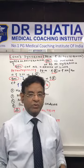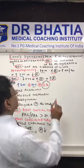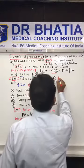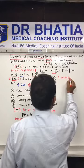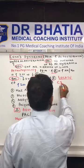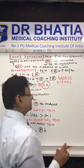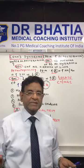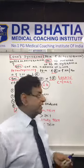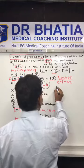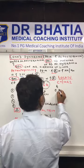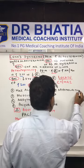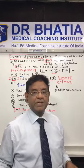Once we confirm Conn's syndrome, since it is usually a unilateral adenoma or bilateral adrenal hyperplasia, we need to locate the problem. For that, we do either a CT abdomen or MRI. This is essential because the final treatment is surgery. In the meantime, for patients presenting with hypertension, medical therapy includes spironolactone, which is an aldosterone antagonist.